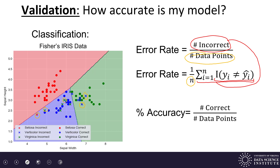Statisticians tend to prefer error rates, while users may find percent accuracy more intuitive — for example, saying a model is 96% accurate may feel more meaningful than saying there's a 4% error rate.